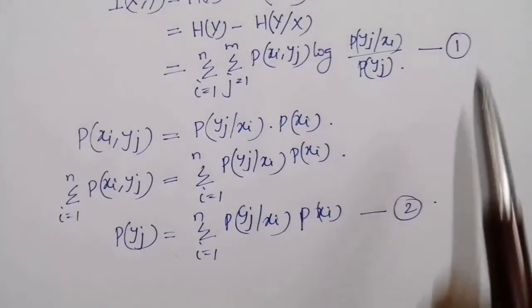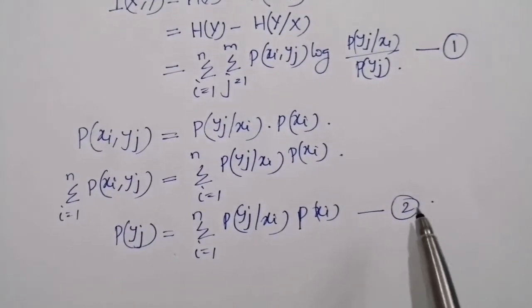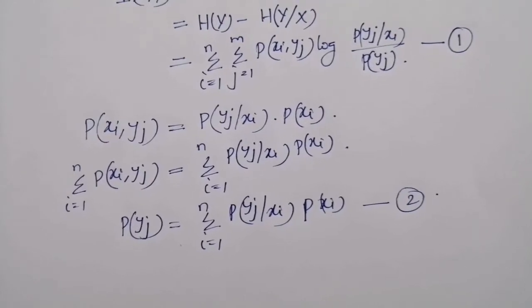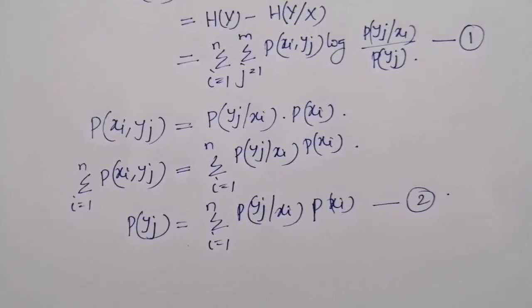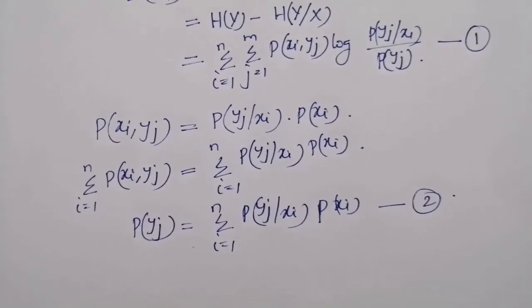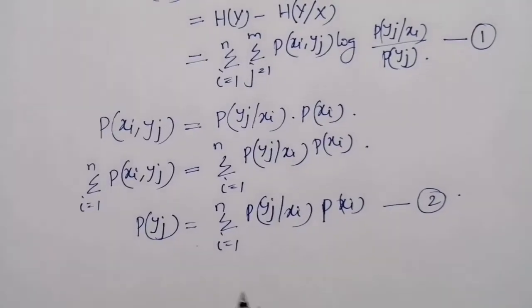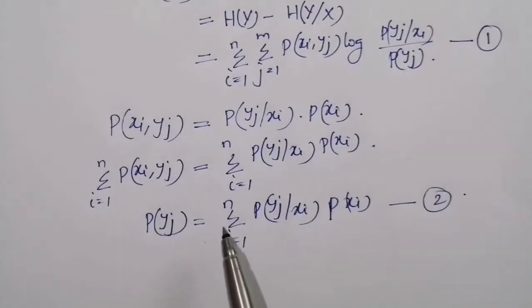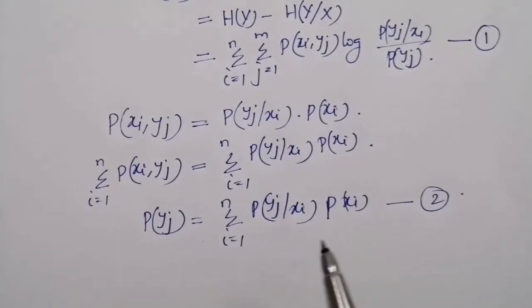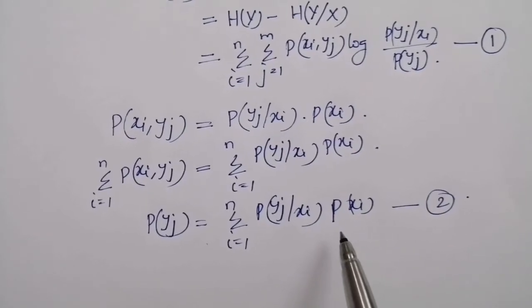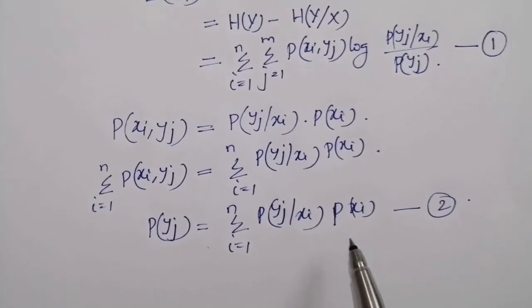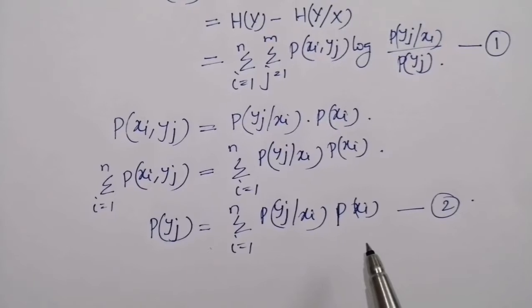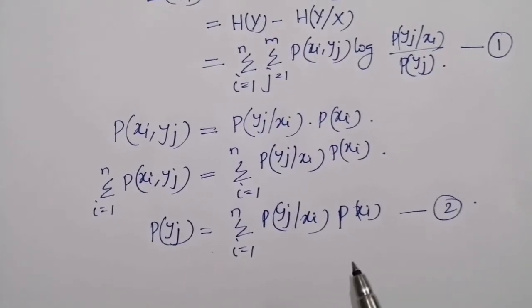By comparing equations 1 and 2, we can see that mutual information of a channel depends not only on the channel but also on the way in which the channel is used. That is, for a given channel, mutual information depends on the probability of the input symbol p(xi). The probability distribution of input symbol p(xi) is independent of the channel.